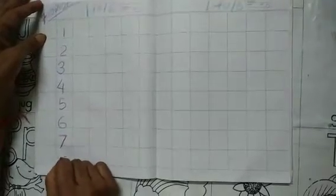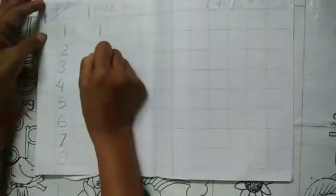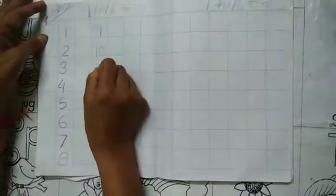Number 1 to 16, revision. 1, 2, 3, 4, 5, 6, 7, 8, 9, 10, 1, 0, 10. 1, 1, 11. 1, 2, 12. 1, 3, 13. 1, 4, 14. 1, 5, 15. 1, 6, 16.